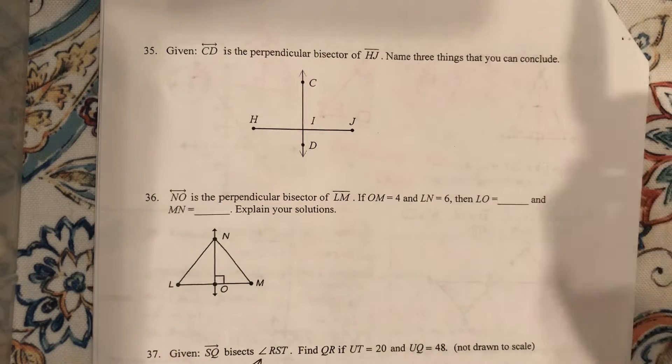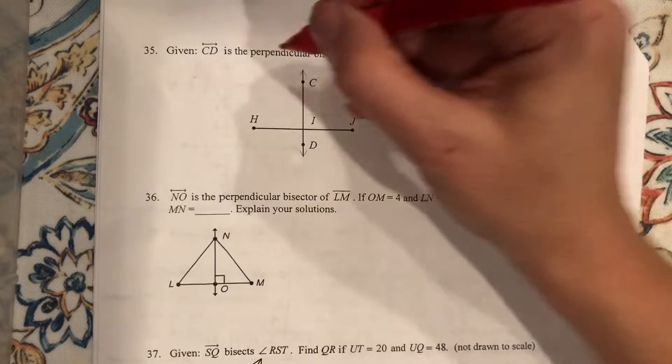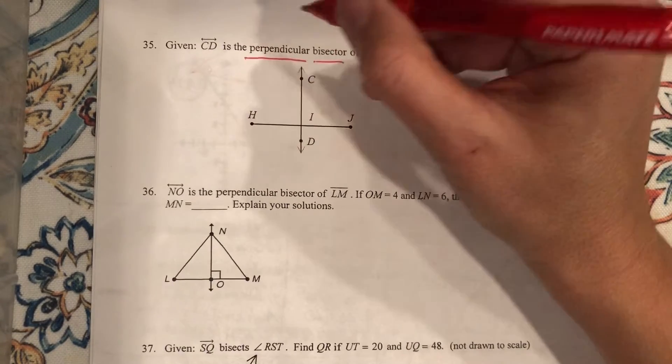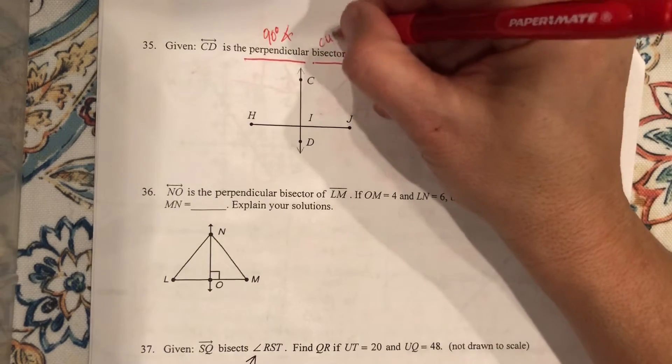Given that CD is the perpendicular bisector of HJ, perpendicular and bisector mean two things: 90-degree angle and cut in half.